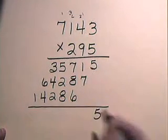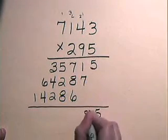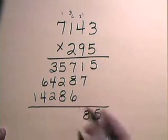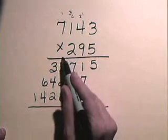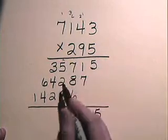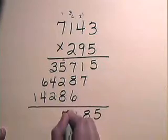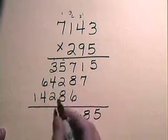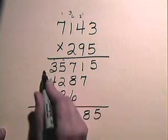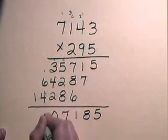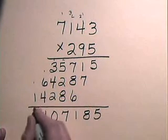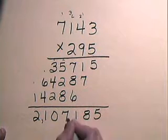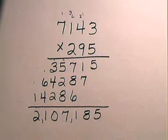Bringing down the 5. 7 plus 1 is 8. 7 plus 8 is 15, plus 6 is 21, carry the 2. 5 plus 2 is 7, plus 2 is 9, plus 8 is 17, carry the 1. 3 plus 1 is 4, plus 4 is 8, plus 2 is 10, carry the 1. 6 plus 1 is 7, plus 4 is 11, carry the 1. And our result is 2,107,185.